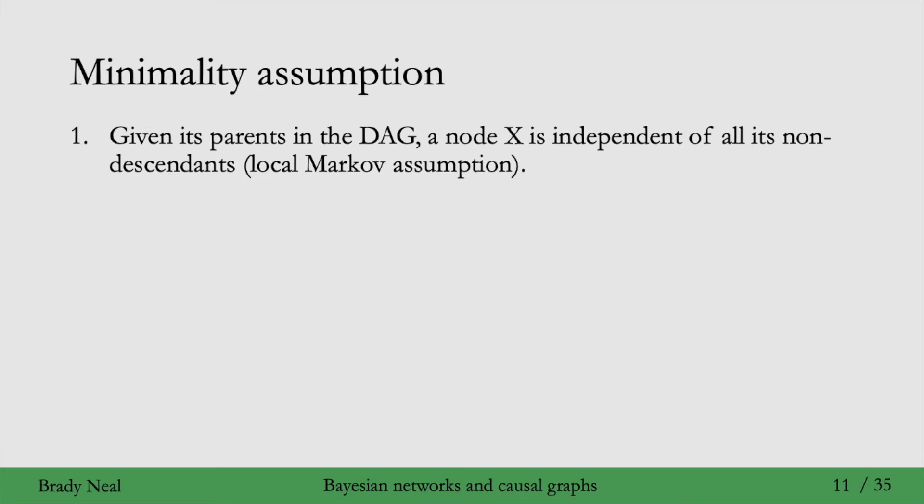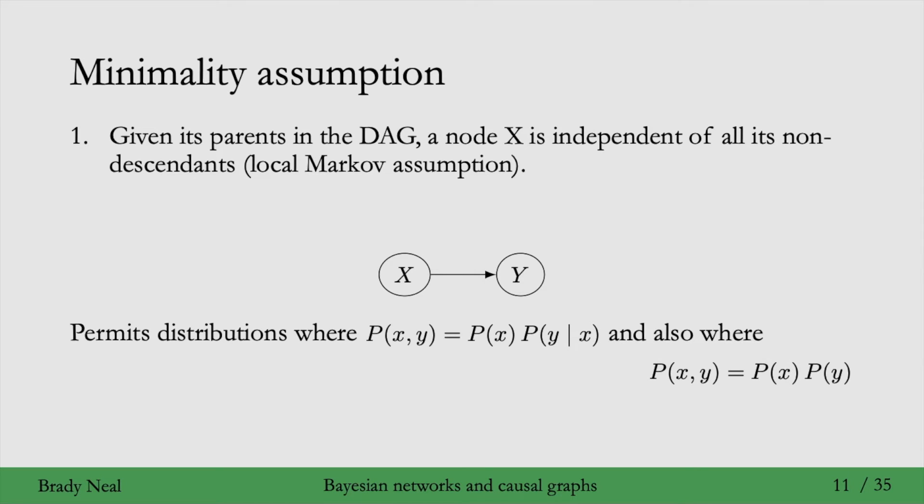To see why we're not satisfied with just the local Markov assumption, consider this graph, x to y. And this graph permits different kinds of distributions. So one kind of distribution is this factorization here. The joint equals P of x times P of y given x.